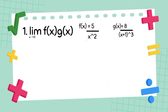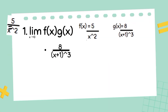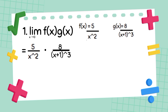Today we are going to solve the equation problem given to us, which is the limit of f of x as x approaches 0 and g of x as x approaches 0. Our given values are f of x equals 5 over x squared and g of x equals 8 over x plus 1 raised to 3.